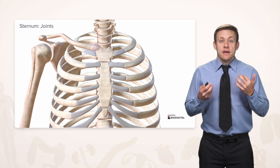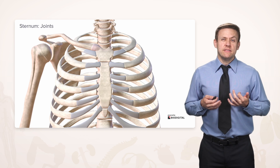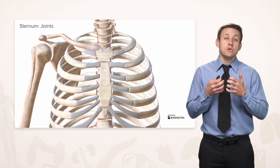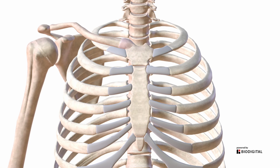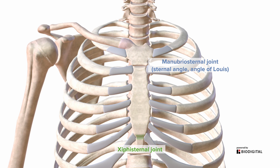The parts of the sternum have joints with each other, although these are synarthroses, meaning there's really no movement between them. We have a joint between the manubrium and body called the manubriosternal joint, also called the sternal angle or angle of Louis, and a joint between the body and xiphoid process called the xiphisternal joint. The manubriosternal joint has three names — a clue that it's important — because it's the most easily palpated projection on the sternum and the site where the second rib attaches, making it a useful landmark on physical exams.